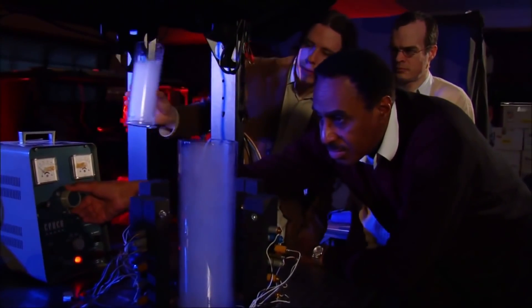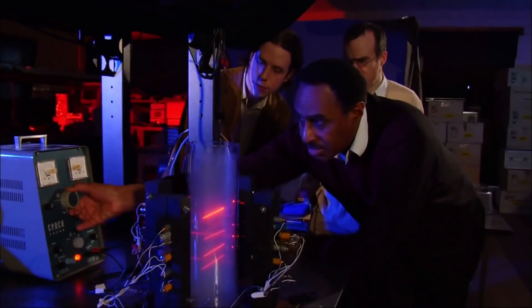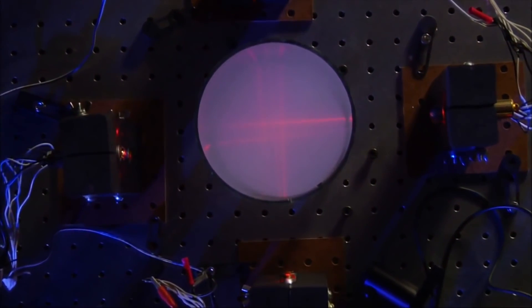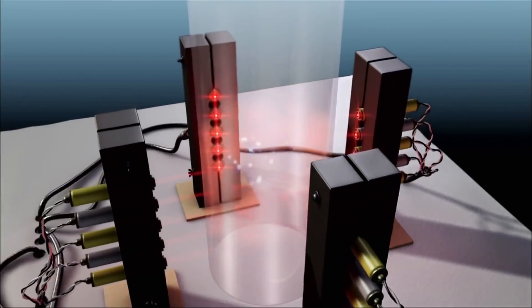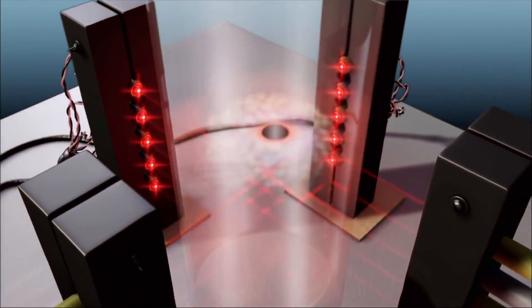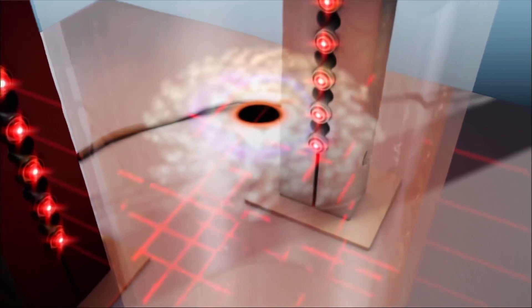Mallett has built a model to demonstrate his concept that a circulating laser beam can create a tunnel of light that twists space and time. It has four intersecting laser beams. The region within that column of light would represent the region in which space is being twisted. And eventually, time would also get twisted by this column of light.